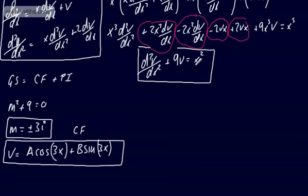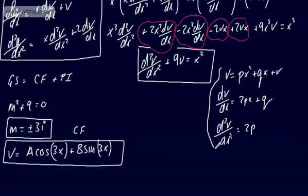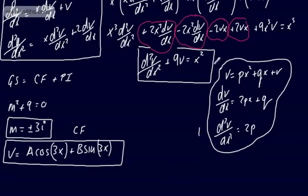We now find a particular integral. Since the right-hand side is x², we try v = px² + qx + r. Then dv/dx = 2px + q, and d²v/dx² = 2p. These form the basis of the particular integral — we have one lot of d²v/dx² and 9 lots of v to substitute.